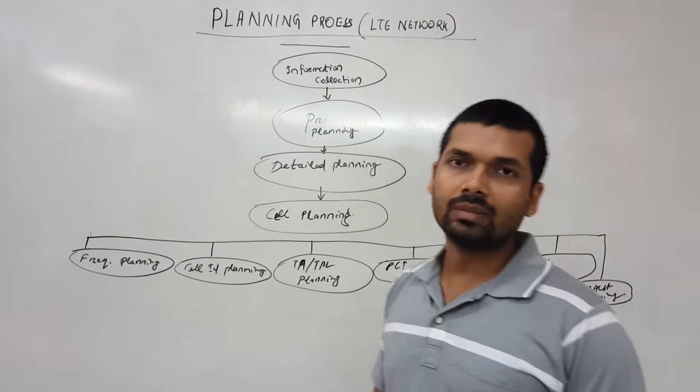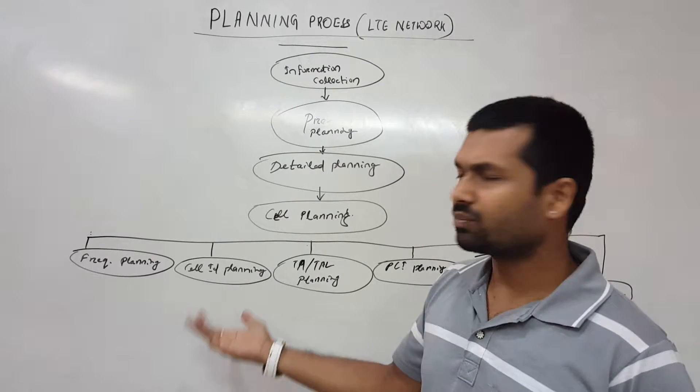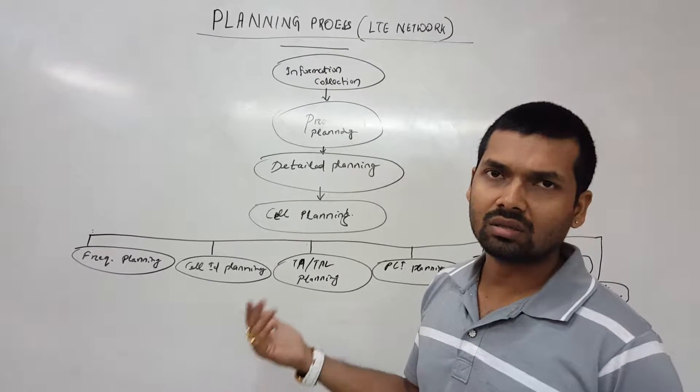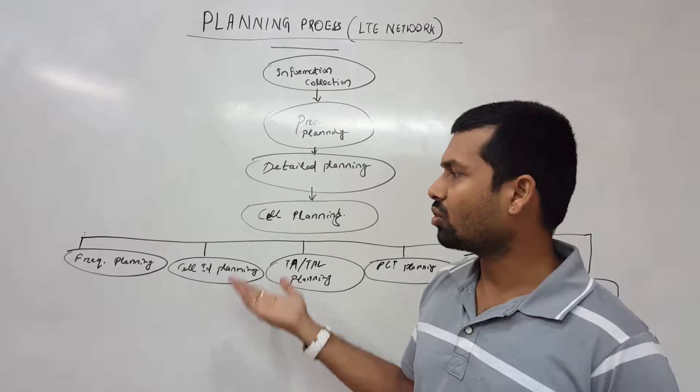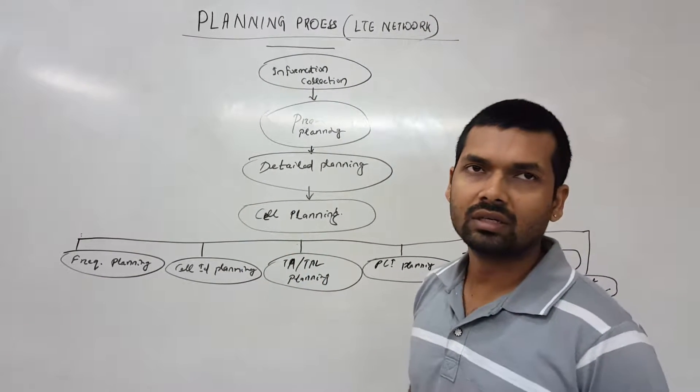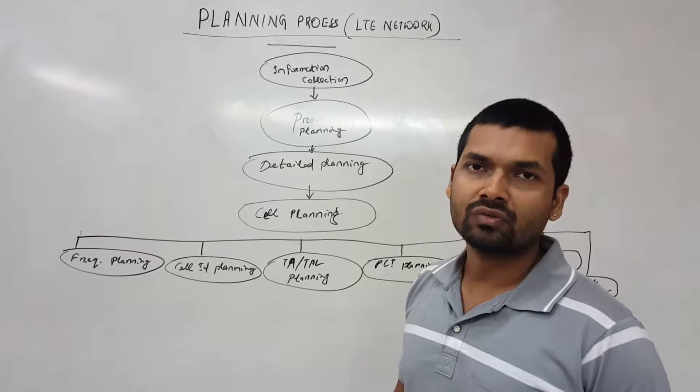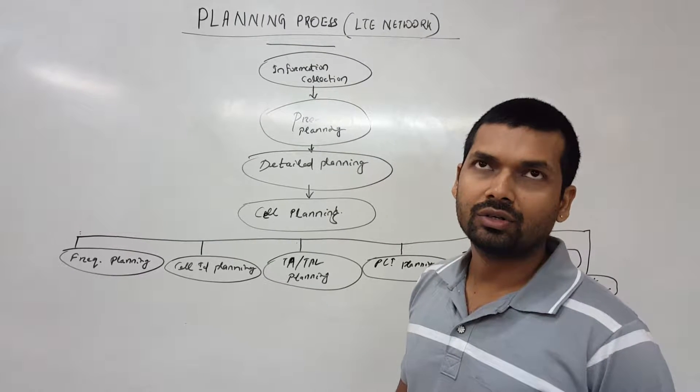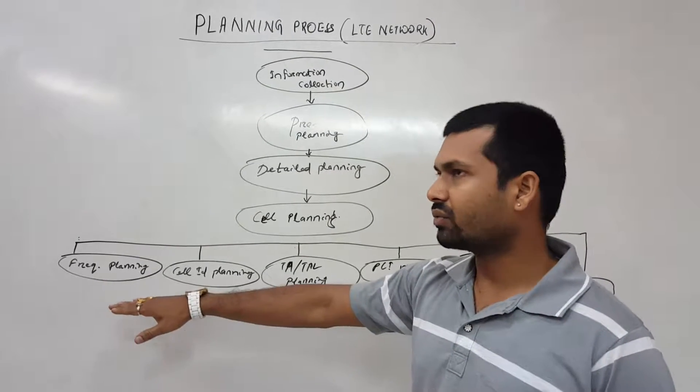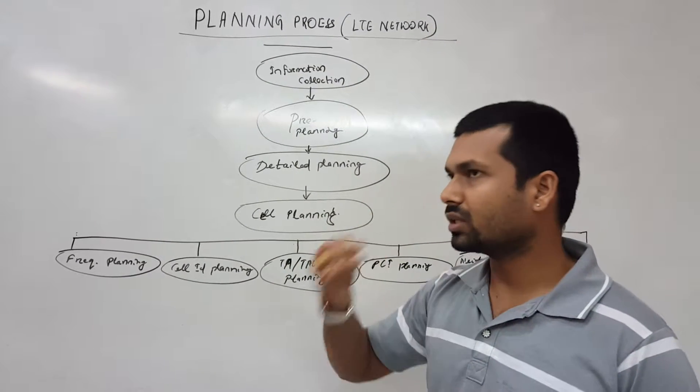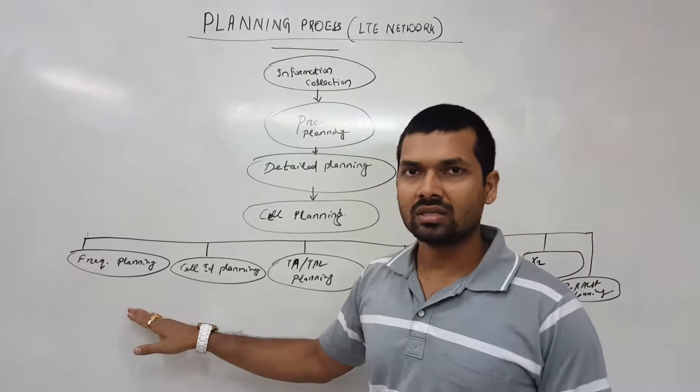First of all we'll do the frequency planning. That means what frequency is available to us: 1.4 or 3 megahertz or 5 megahertz or 10 or 15 or 20. Accordingly we'll have resource blocks like 100 resource block for 20 megahertz, 75 resource block for 15 megahertz.